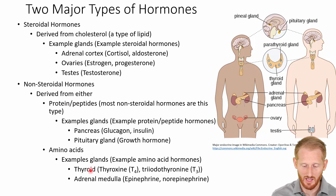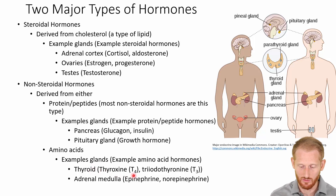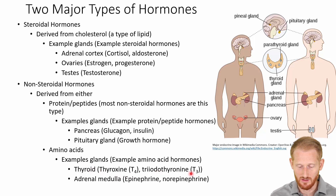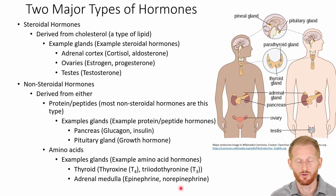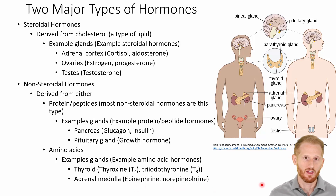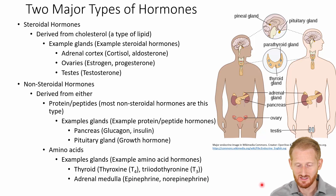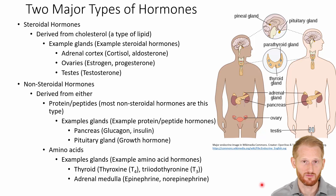For the amino acid type hormones, which again fall within the non-steroidal hormone umbrella, we have the thyroid gland, which releases thyroxine (T4) and triiodothyronine (T3), and the adrenal medulla, which releases epinephrine and norepinephrine. So we have lots of different classifications of hormones, and these classifications do affect the function of the hormones.